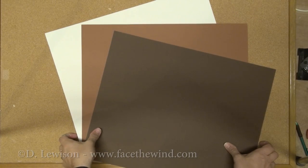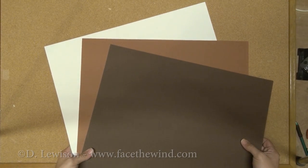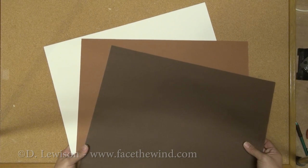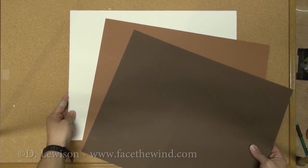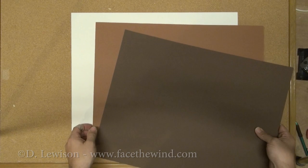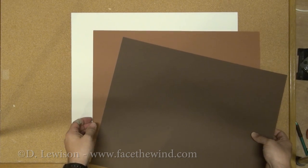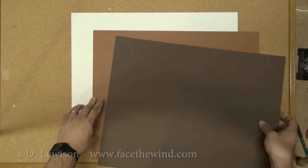So to start off, I start with three 16 by 20 inch mat blanks representing the three colors that I'm going to be using. The white will be the outside.